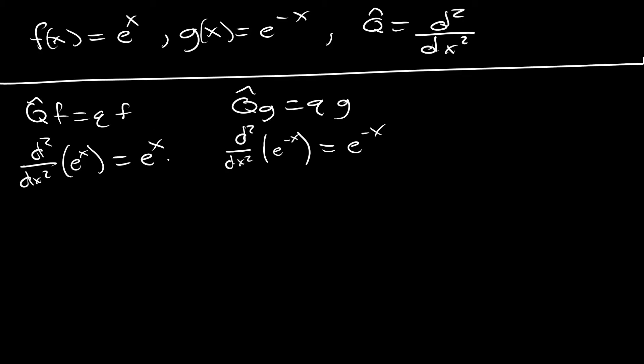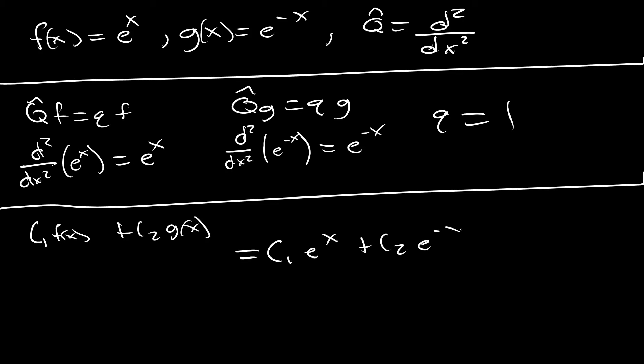So right now, everything looks good. We have e to the x. We started with e to the x. We have e to the minus x here, and we started with e to the minus x. So things look good. Now it's time to figure out our eigenvalue q. We know that they have to be the same thing. And it's pretty easy to see here from these two results that q is just equal to 1. And so now we want to construct two linear combinations that are orthogonal. And so what we're going to do is we're going to assume the general linear combination model of c1 f of x plus c2 g of x. And when we plug everything in there, we're going to get c1 e to the x plus c2 e to the minus x.